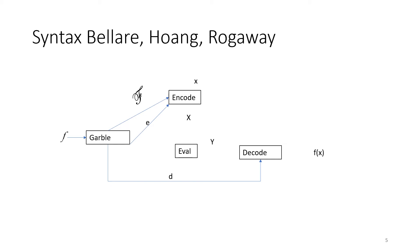We need to get the garbled input: little x, which is the clear input, is encoded using the encoding string to get big X. Now with the garbled function or circuit and the garbled input, the evaluator can run eval to get a garbled output. That garbled output can then be decoded to learn the final evaluation of the function.